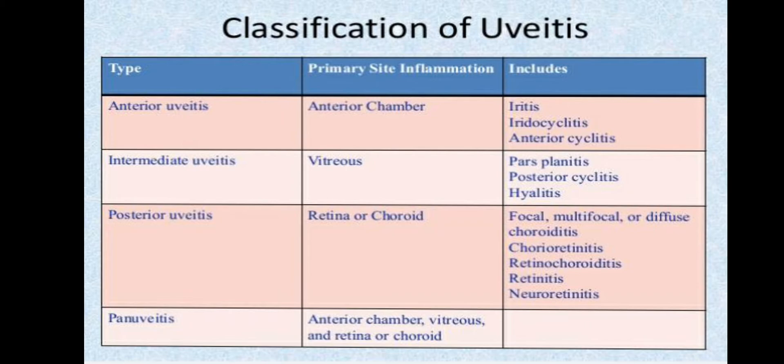The next type is intermediate uveitis, which is inflammation in the middle of the eye, also known as cyclitis. Then posterior uveitis, which is inflammation in the back of the eye — also called choroiditis — where the retina or choroid are affected.